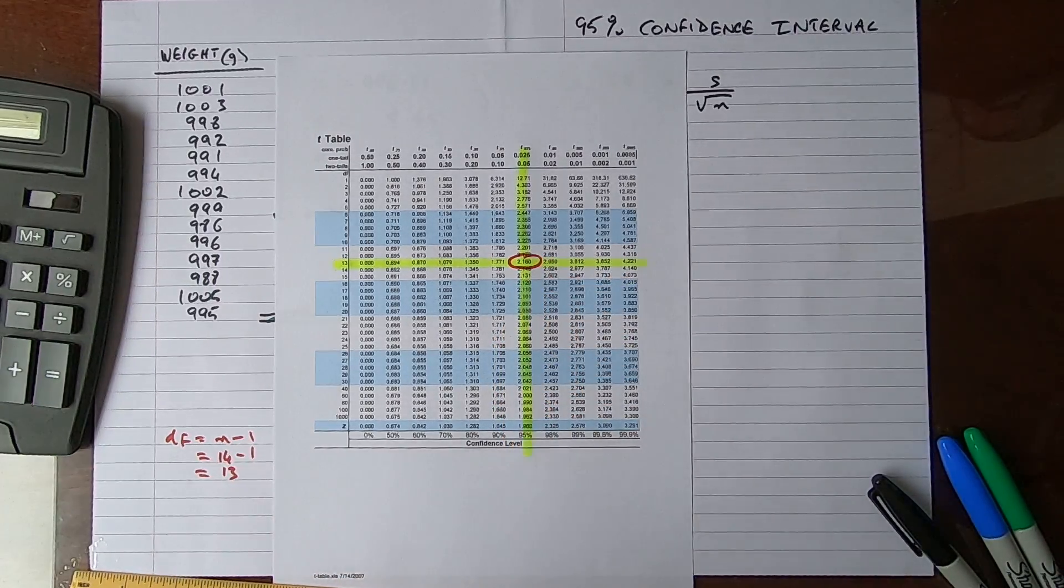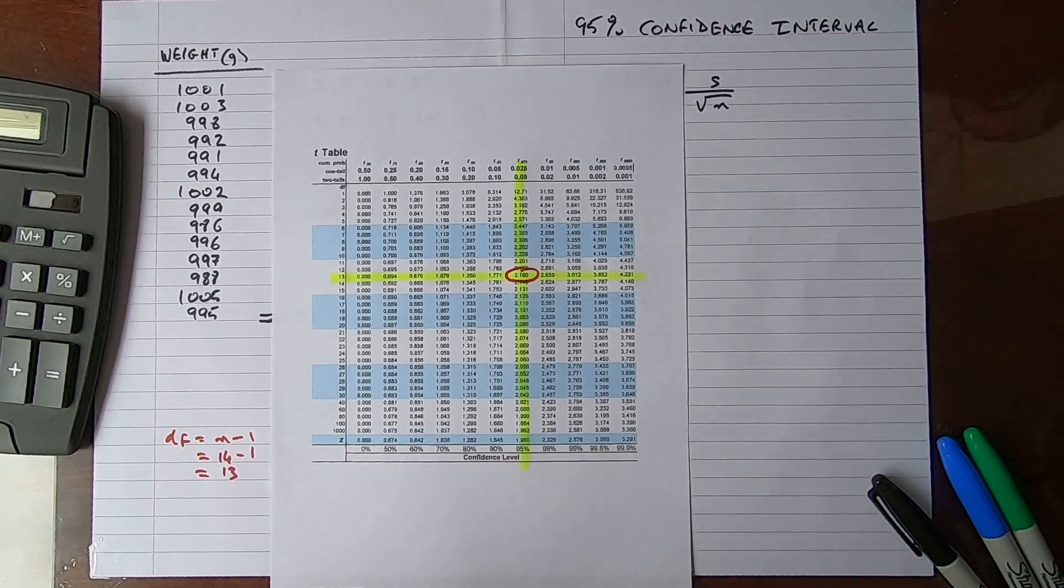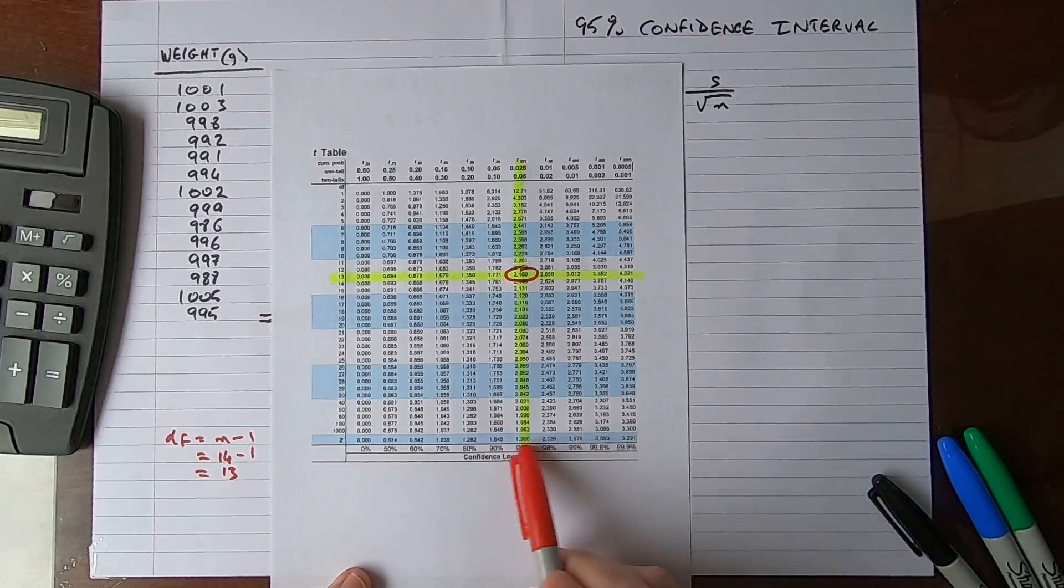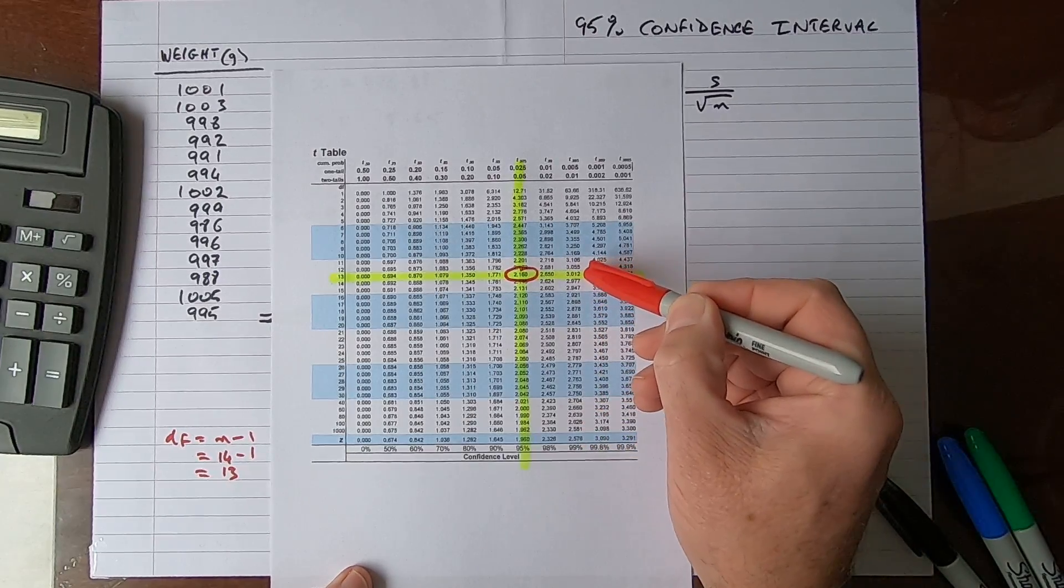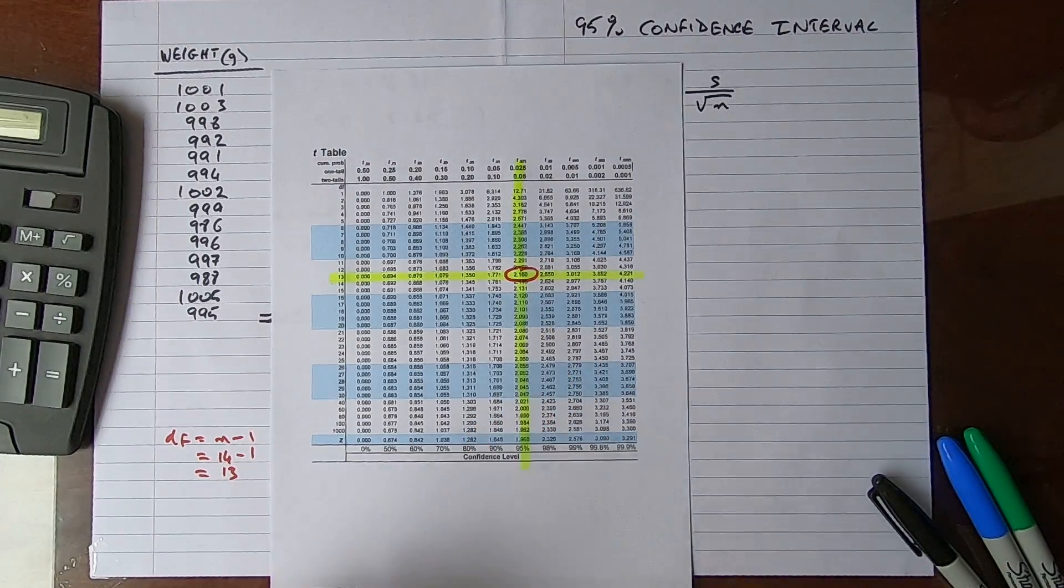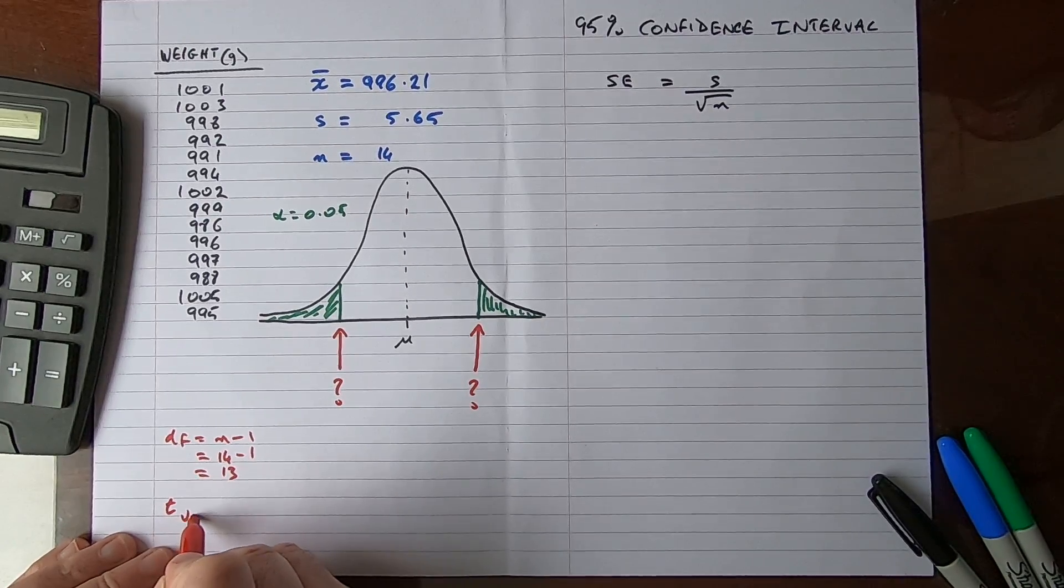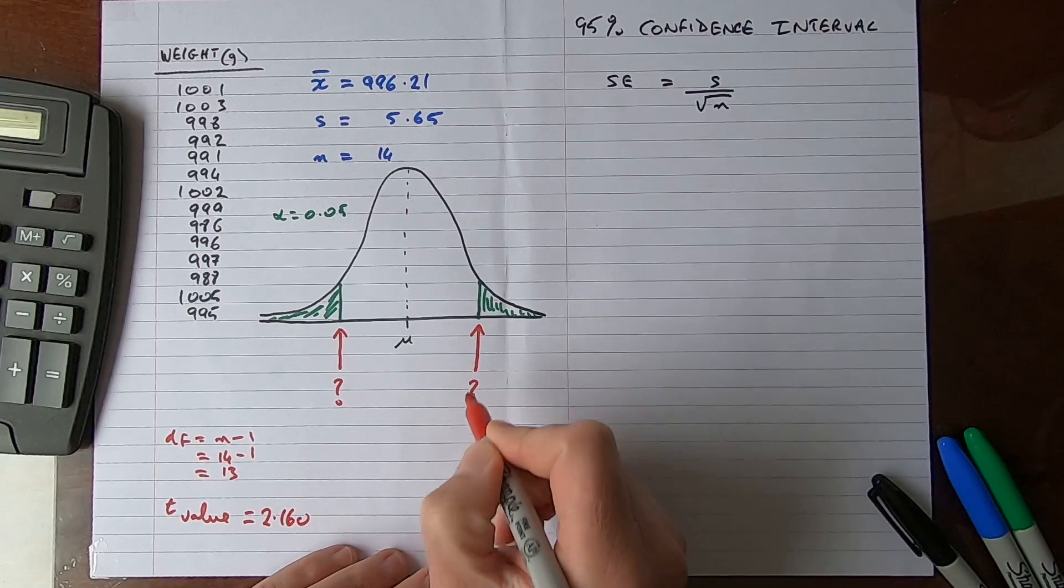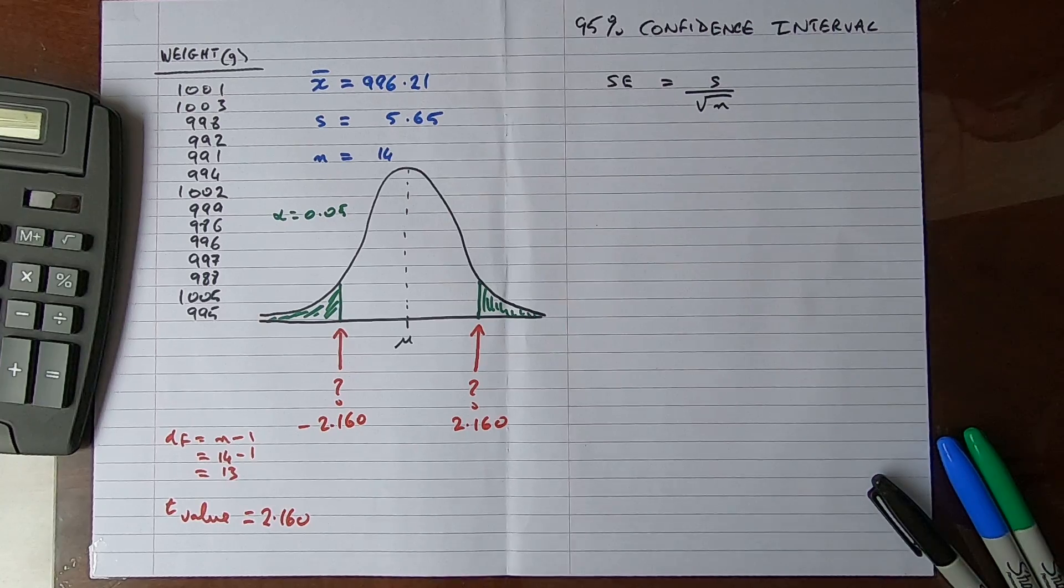By the way, if you wanted to do 99% confidence, you would have the same degrees of freedom but move over to a different column. For example, at 99% confidence interval my t value would be 3.012. But we're going to stick with 95% confidence. So my t value equals 2.160 and minus 2.160 on the left tail. That value is going to become important in a moment.